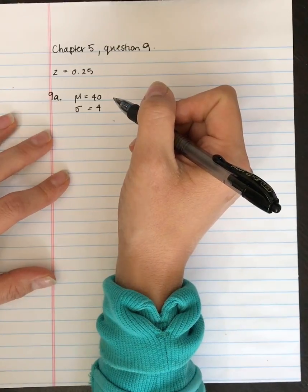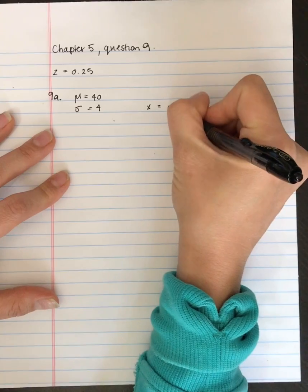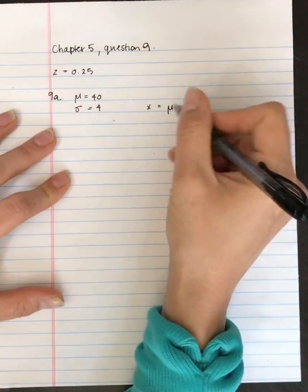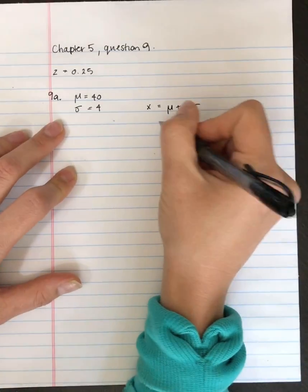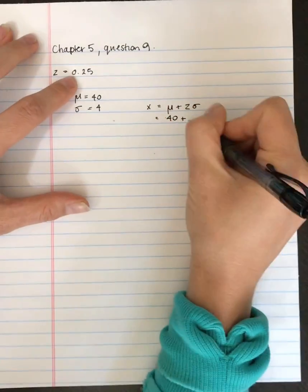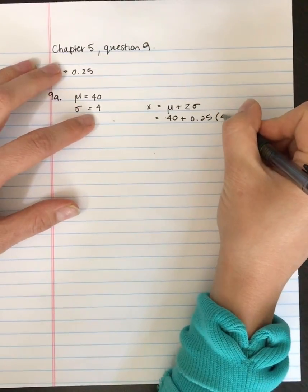So the formula that we want to use is x equals the mean plus the z-score times the standard deviation. So let's plug those values in. We take 40 plus the z-score is 0.25 times the standard deviation of 4.